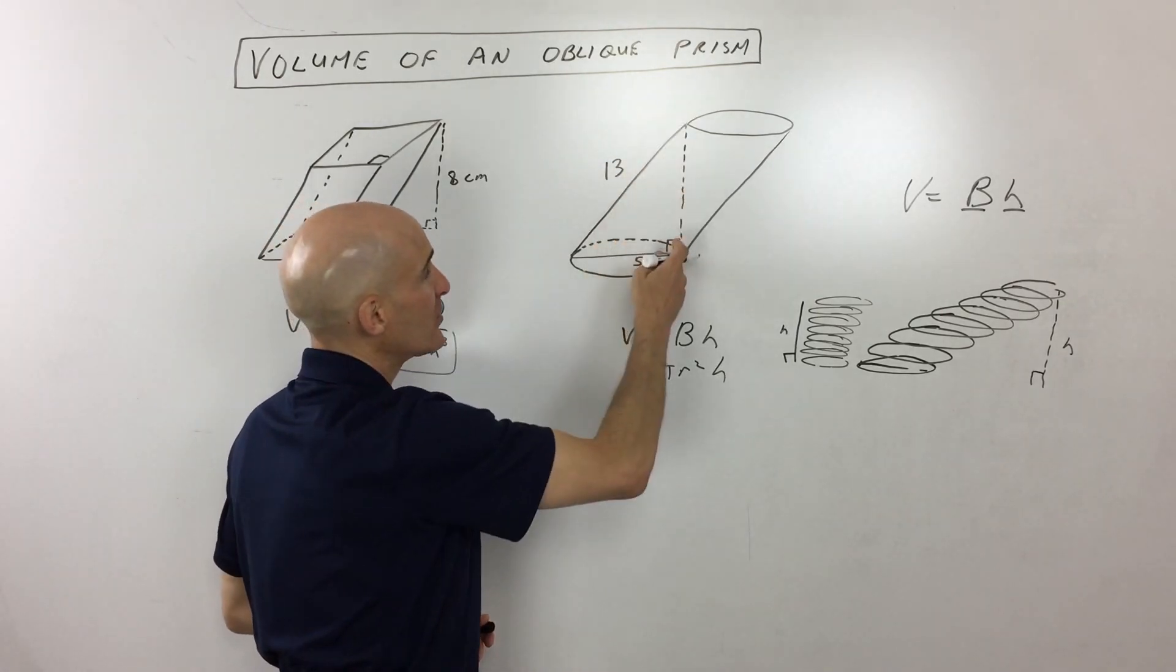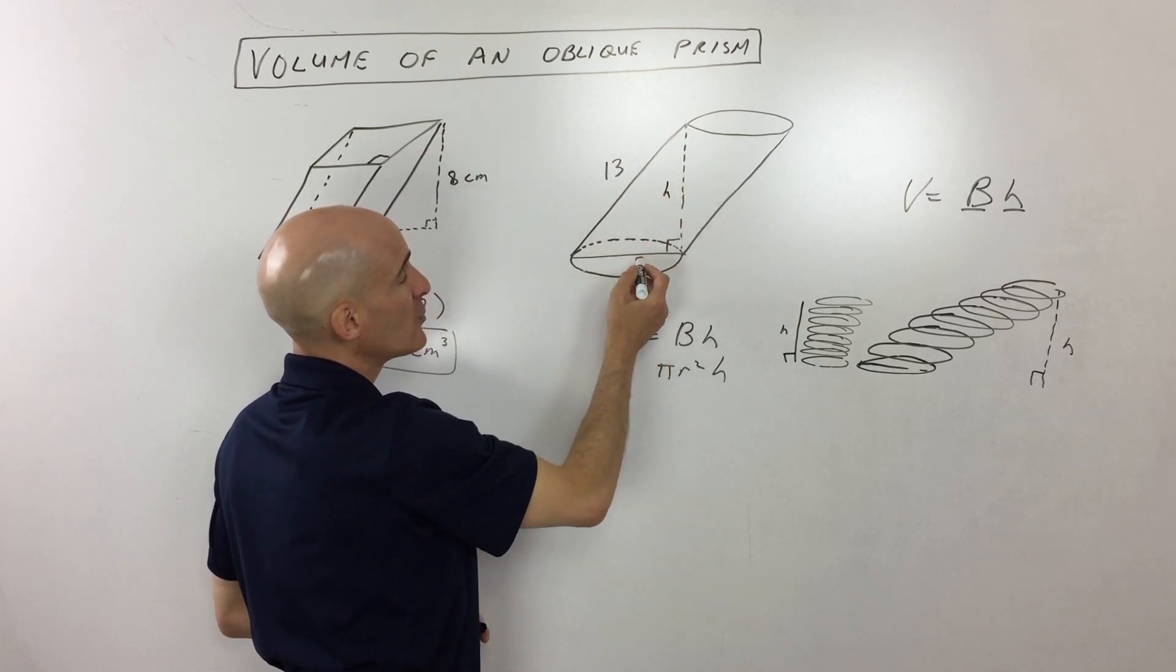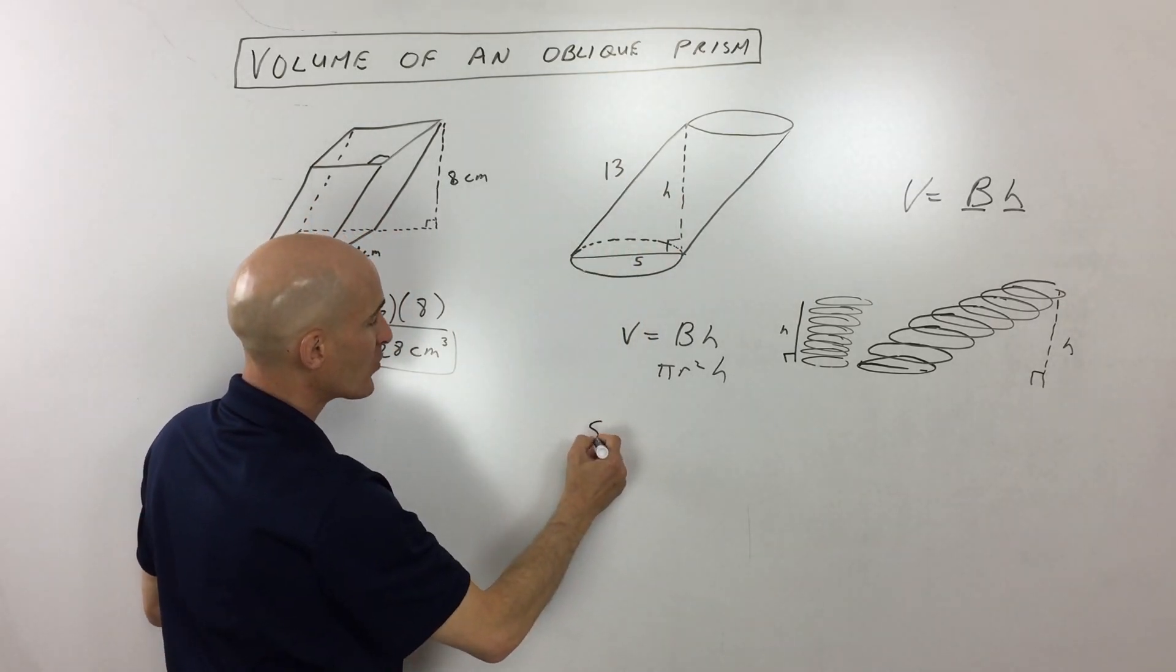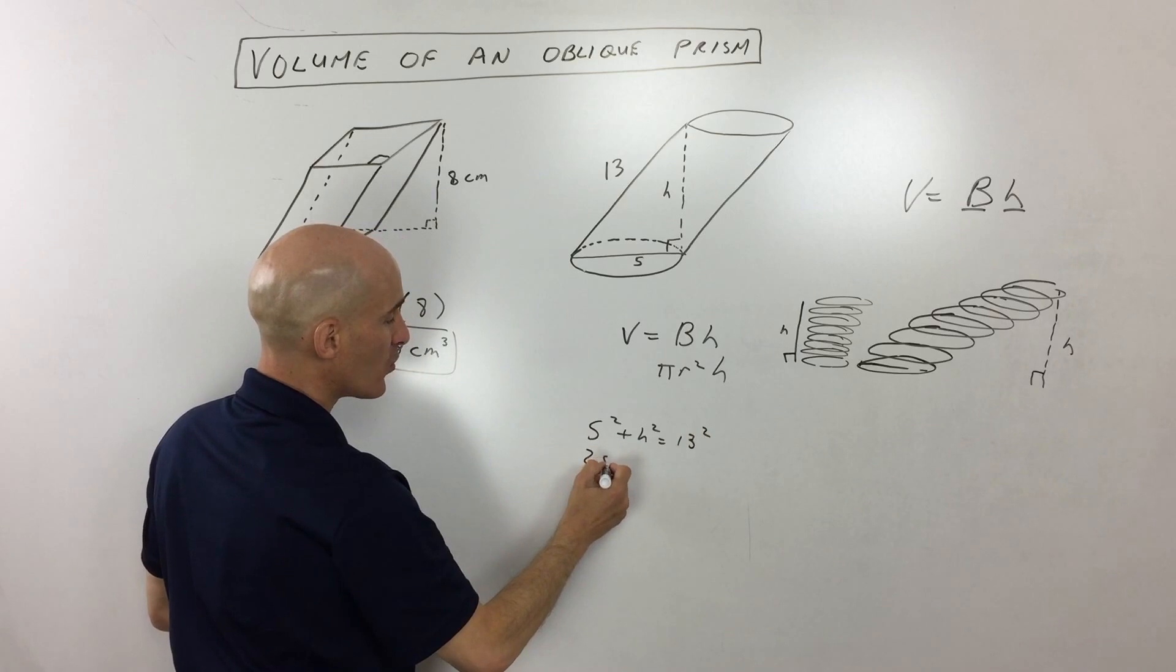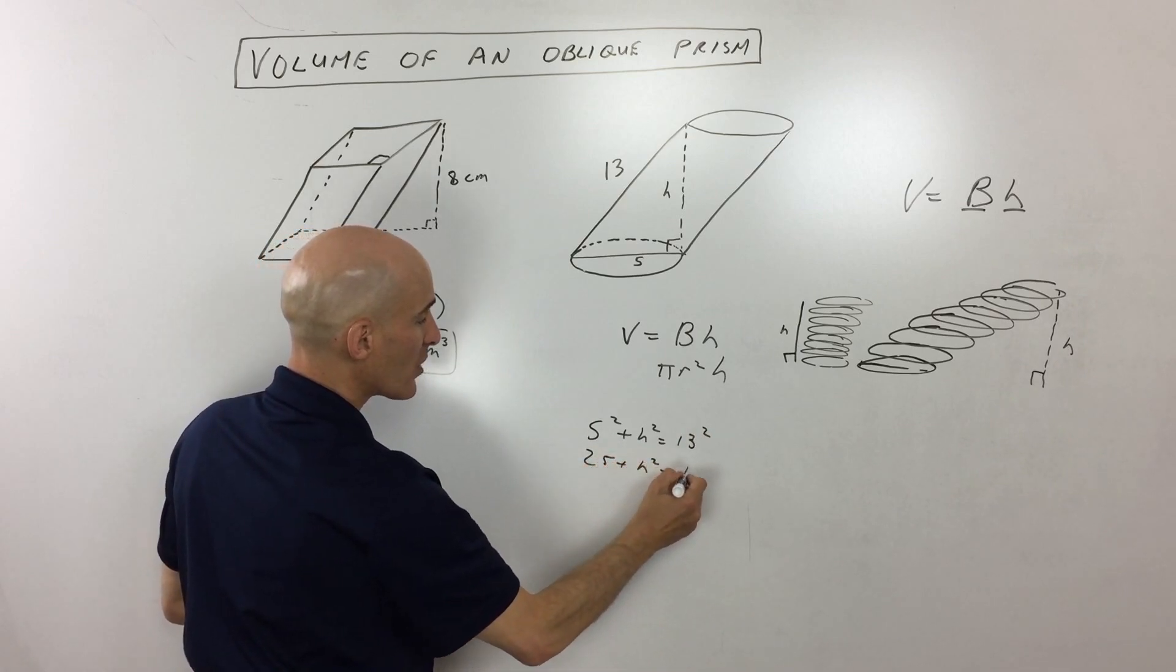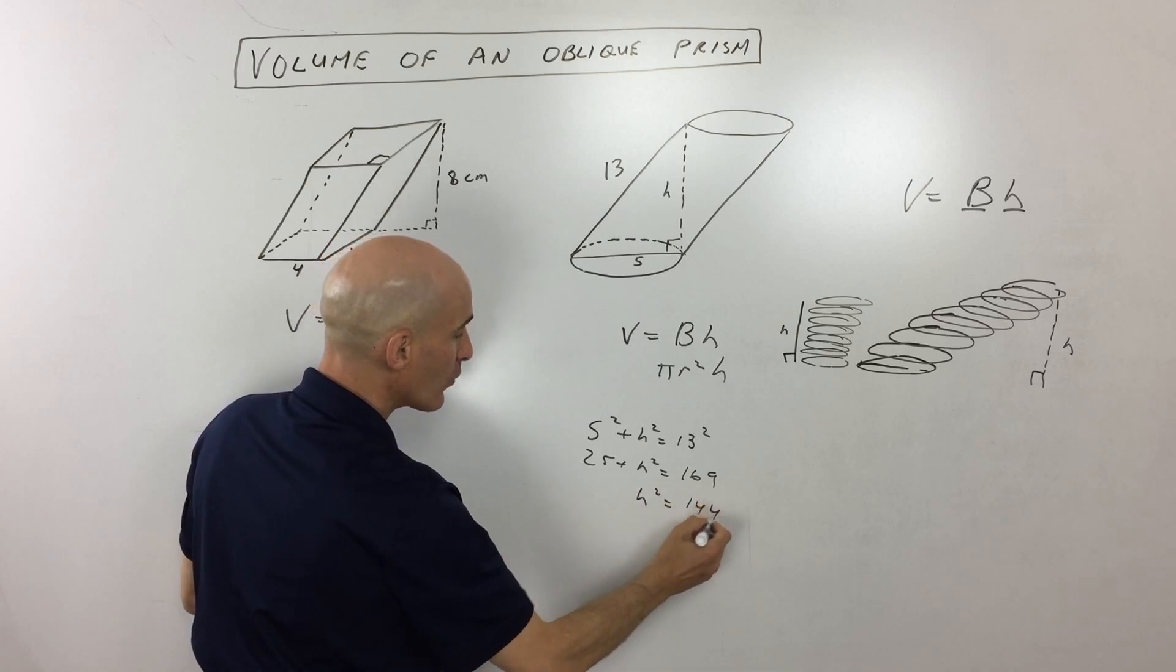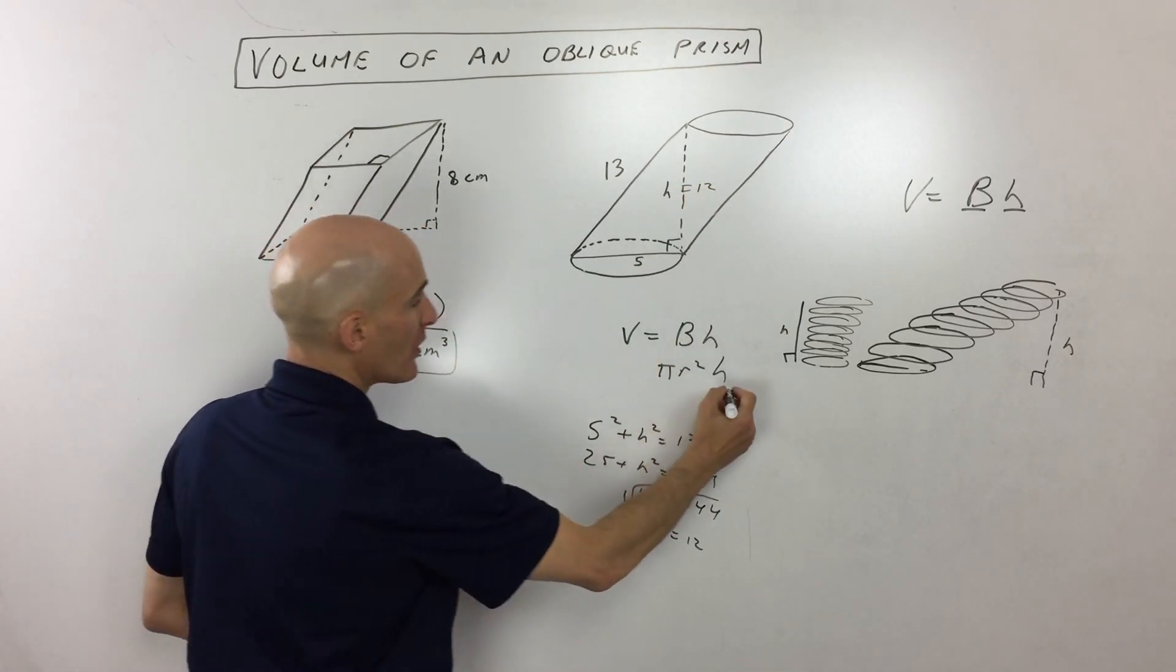We want the perpendicular height right there. So you can see by doing Pythagorean theorem, we have 5 squared plus h squared equals 13 squared. So that's 25 plus h squared equals 169. Subtract 25 from both sides, we get 144. And if you take the square root of both sides, you can see that height is 12. So let's go ahead and put that in there.